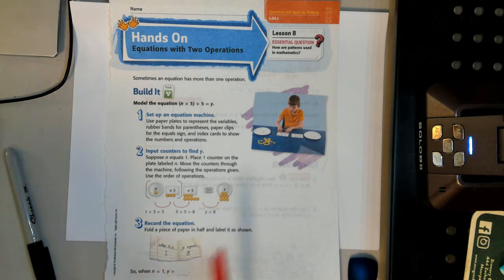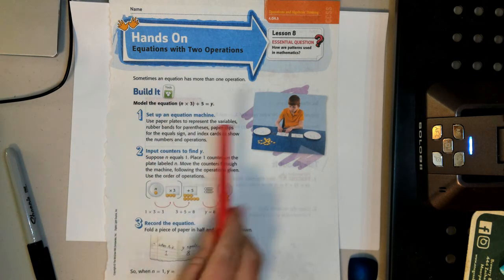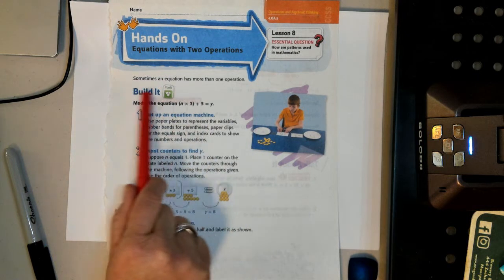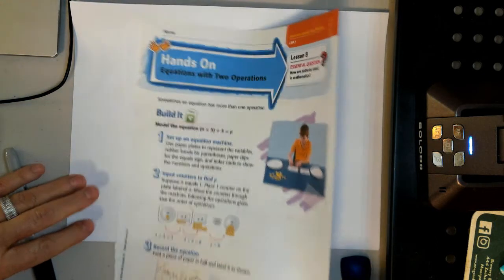All right, so we're going to look at this. It says sometimes an equation has more than one operation. And we're going to look at this equation right here and solve it. So we have, it says model the equation n times 3 plus 5 equals y, and they have you making like a little machine. They're having you make an equation machine. So I'm going to show you how I'm going to do it, but I'm first going to write the equation right here.